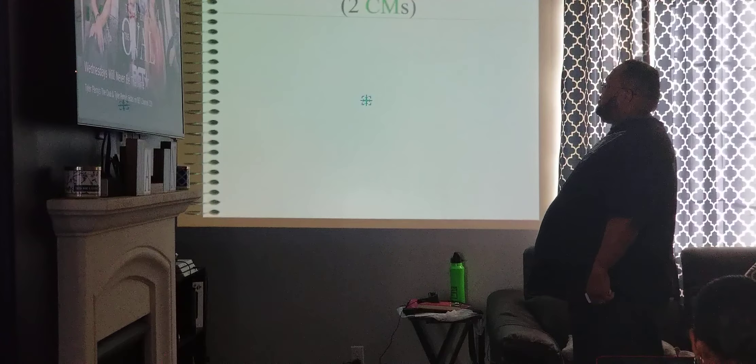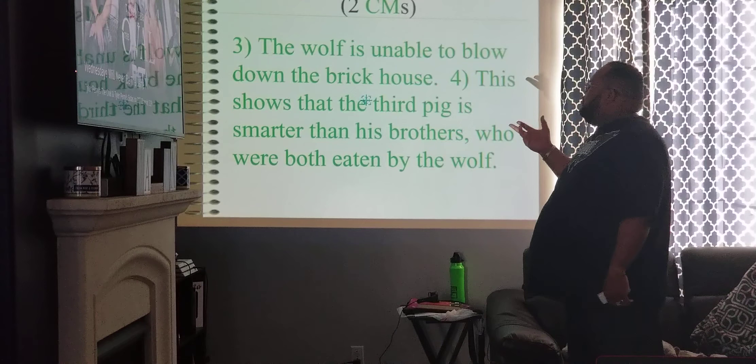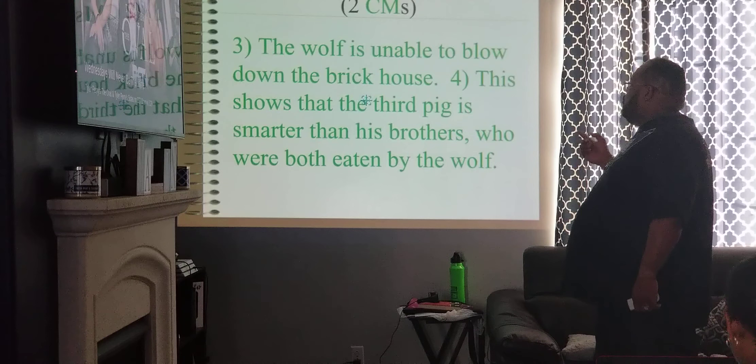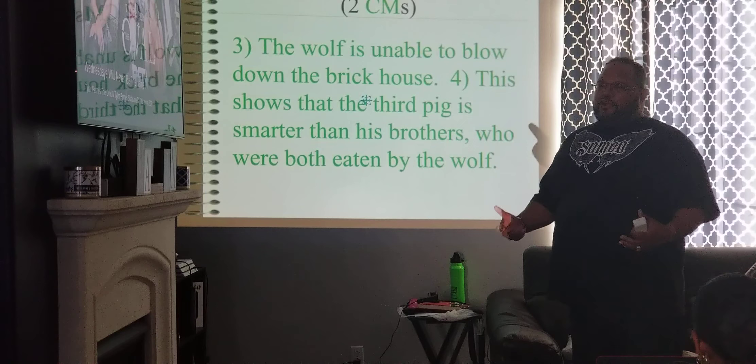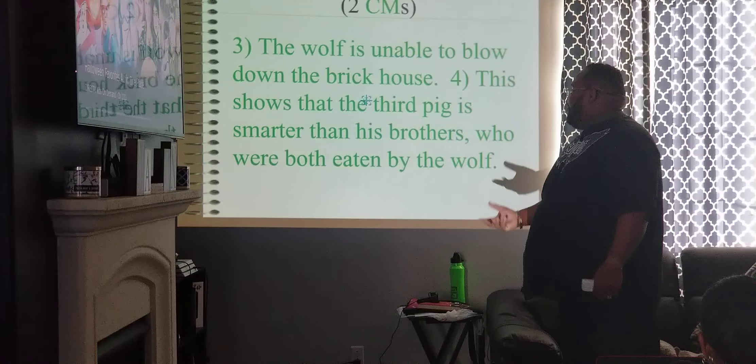Example: 'The wolf is unable to blow down the brick house. This shows that the third pig is smarter than his brothers, who were both eaten by the wolf.' Here's the commentary — you're taking this from what you read and giving it a spin by showing what it means.